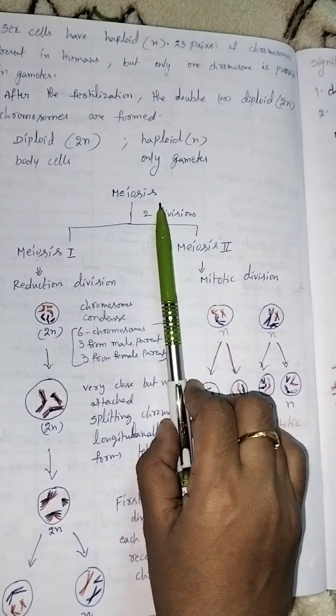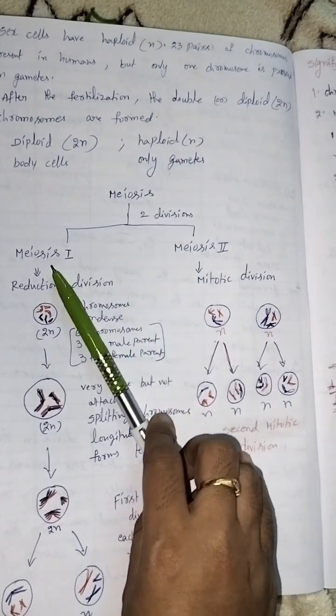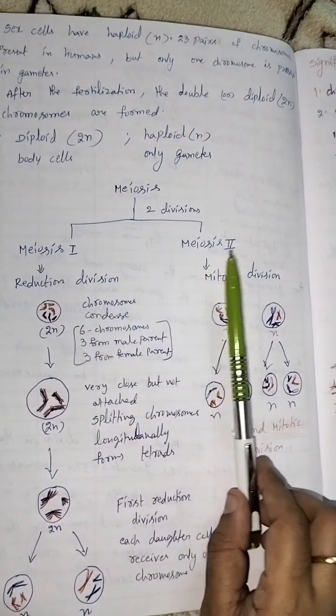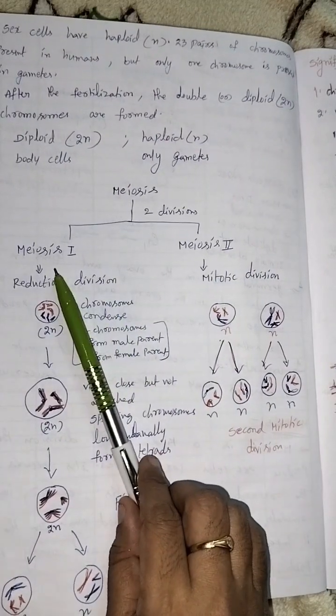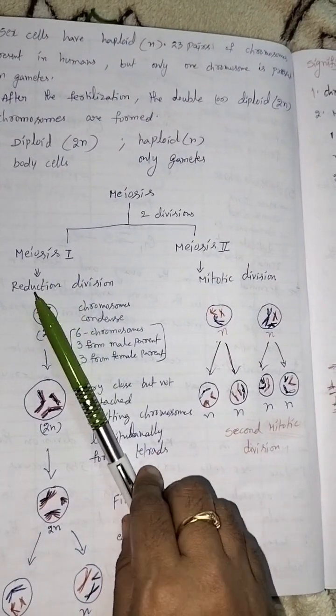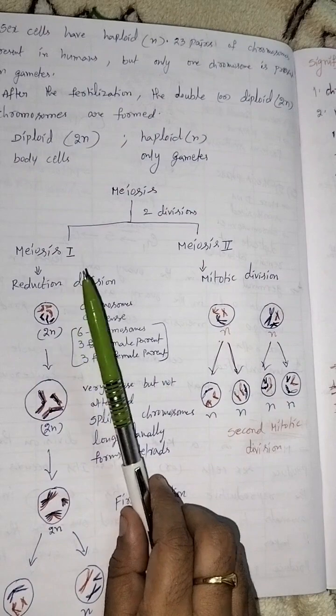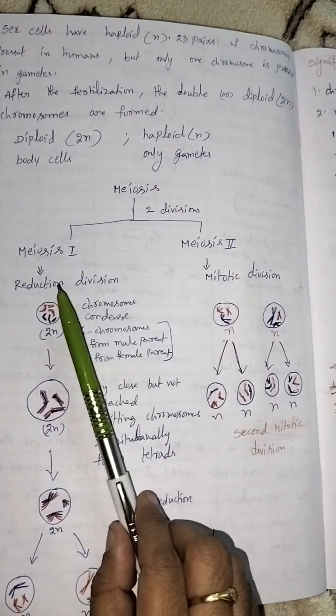Meiosis cell division has two divisions: Meiosis 1 and Meiosis 2. Meiosis 1 division is very important. This is also called reduction division.